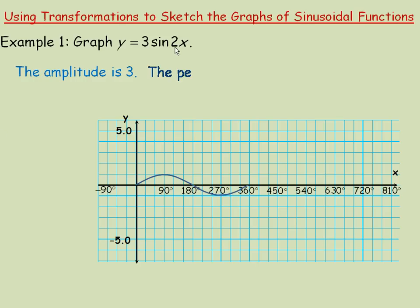The 2 here affects the period. The period is 360 degrees divided by that 2, so 360 divided by 2 is 180. So the period of this function is only half as long as the original sine x function.